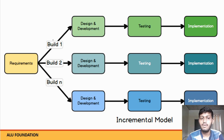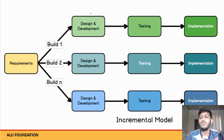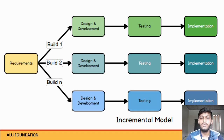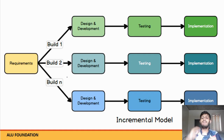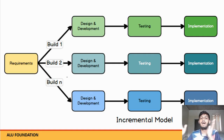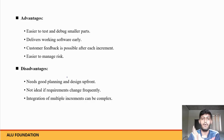Yahan par login ho sakta hai — Login module, Logout module, Signup module, Homepage module. Toh login module ko kya karo? Design karo, usko develop karo, test karo, aur implement karo. Phir build hoi aapka logout — logout ko jo bhi requirement hai woh lelo, usko design karo, develop karo, test karo, implementation. Divide karna hai — jo bhi requirements hain, woh modules mein divide karna hai, separately design, develop, aur test karna hai. So this comes under the incremental model.